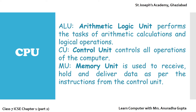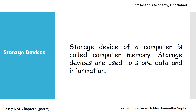Let's learn about the three units of CPU in detail. First is ALU. ALU stands for Arithmetic Logical Unit. It performs the task of arithmetic calculations as well as logical operations. Second is CU. CU stands for Control Unit. It controls all operations of the computer. The third unit of CPU is MU. MU stands for Memory Unit. It is used to receive, hold, and deliver data as per the instructions from the Control Unit.